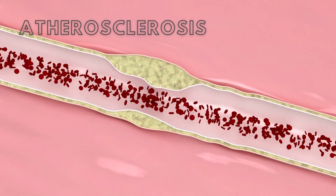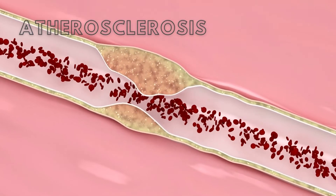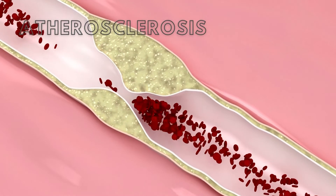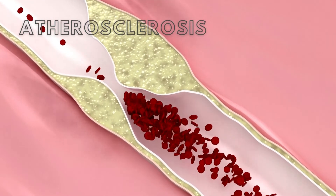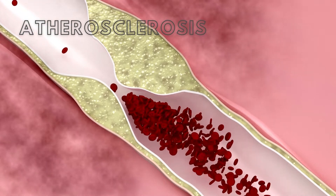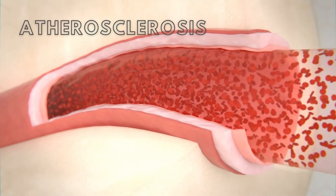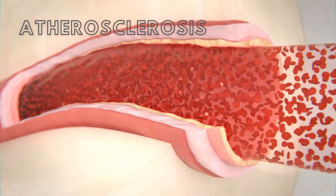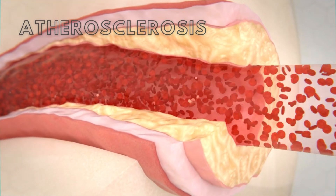Atherosclerosis is a disease of the cardiovascular system in which a substance called plaque, composed of fat, cholesterol, calcium, and other substances, builds up within the arterial walls. Over time, this plaque hardens, narrowing the lumen of the artery and thereby reducing blood flow to the capillaries downstream of the plaque buildup.